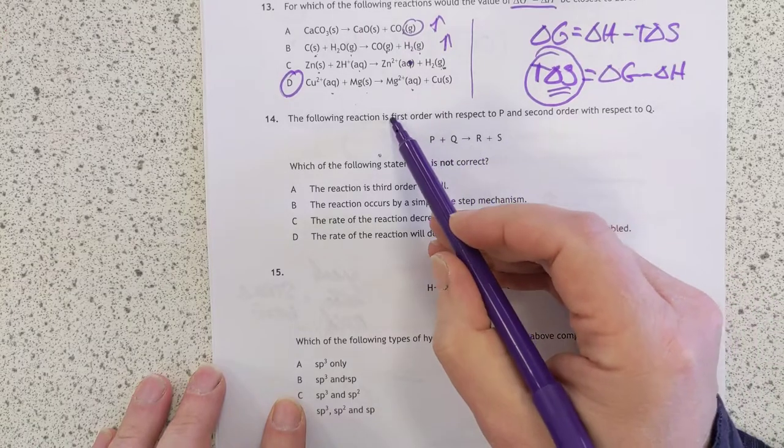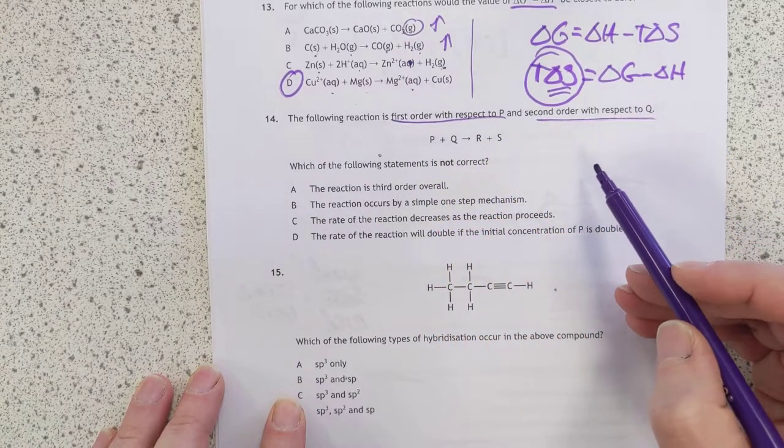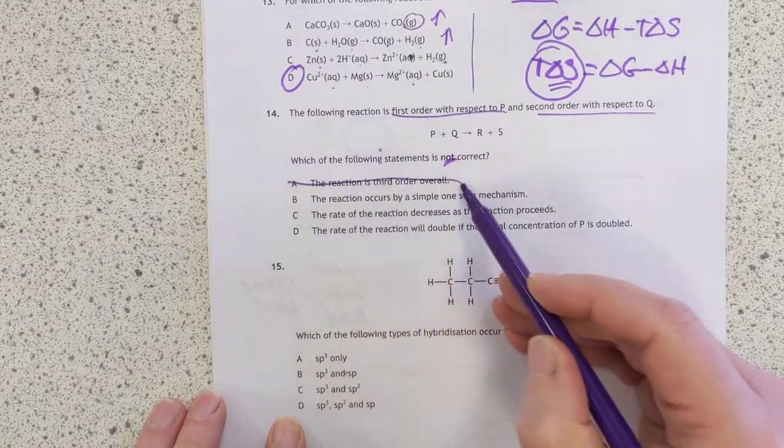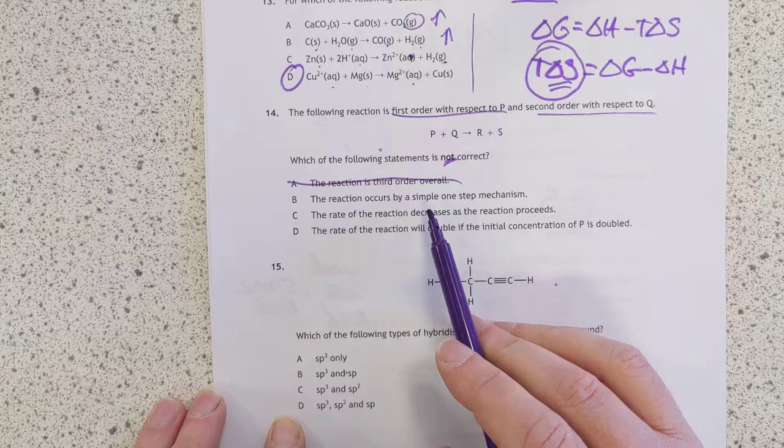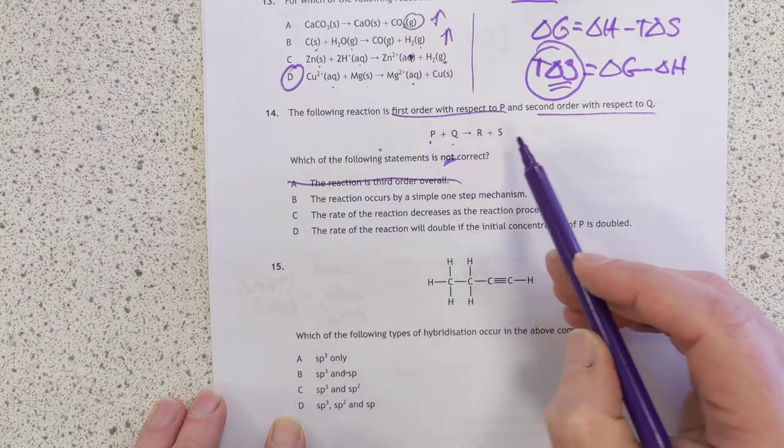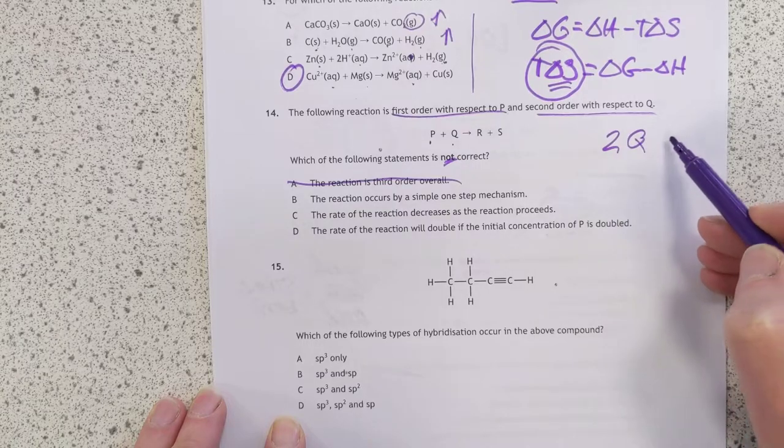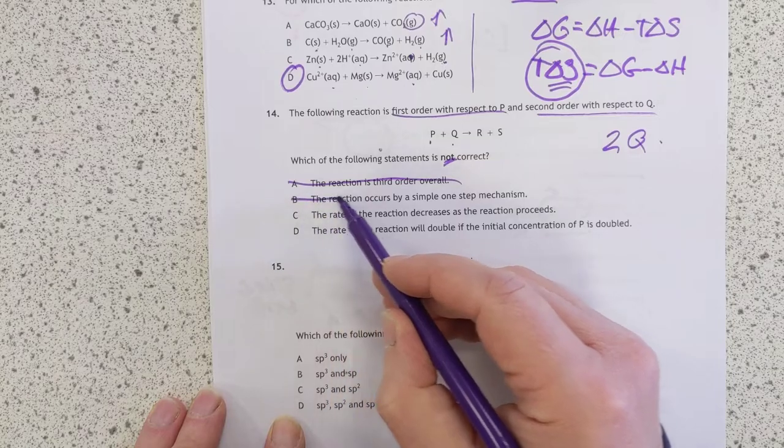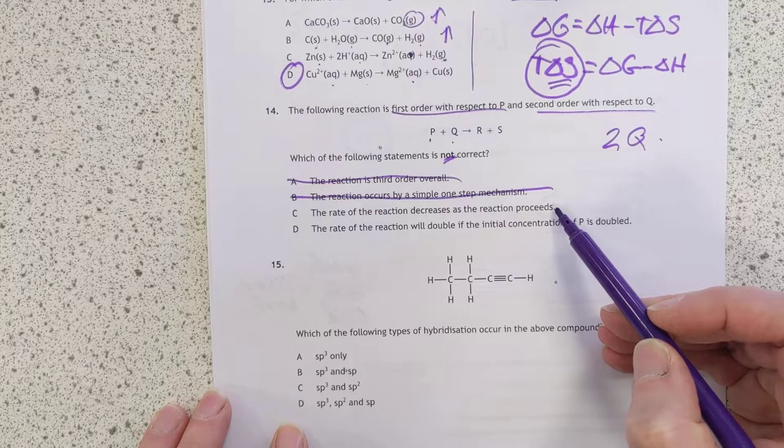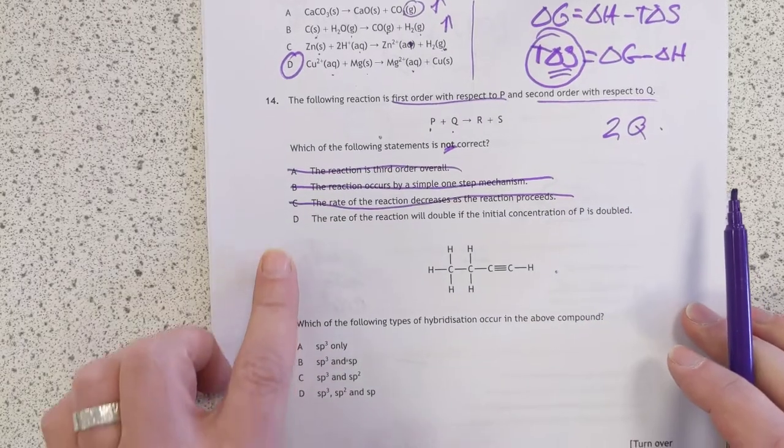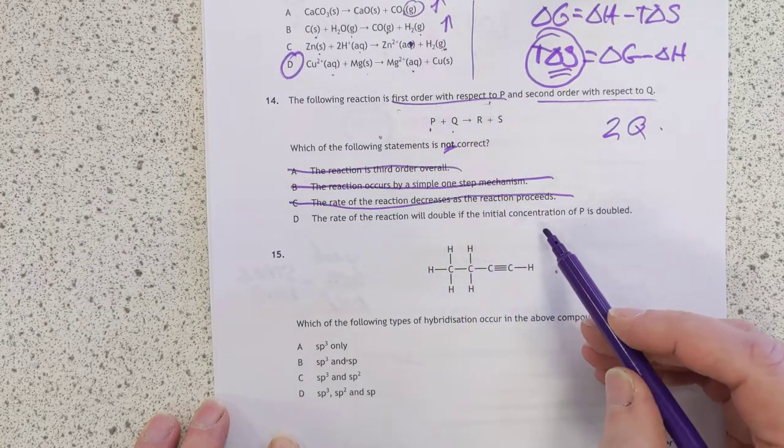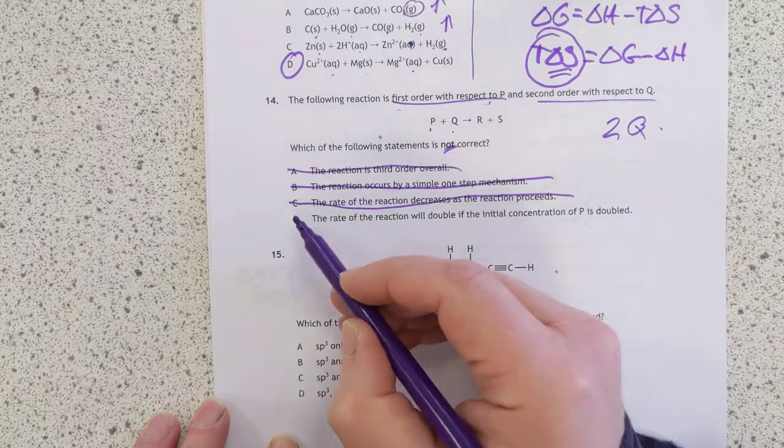Number 14. The following reaction is first order with respect to P. Second order with respect to Q. Which the following is not correct. The reaction is third order overall. That's totally fine. So that's not an answer. The reaction occurs by a simple one-step mechanism. Definitely not. Because. How do I know that? Because there's only one P and one Q here. And yet, second order with respect to Q means that there are two Qs in the rate determining step. And that's not what we're seeing here. So it can't be a single step. The rate of the reaction decreases as the reaction proceeds. That, I'm going to say, is true for all reactions. So I'm hoping that's the last one again. The rate of reaction will double if the initial concentration of P is doubled. Yeah. First order with respect to P. So multiply it by multiplied concentration of P by 2. And the rate will double as well.